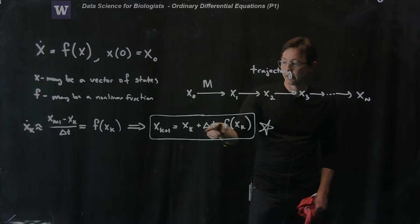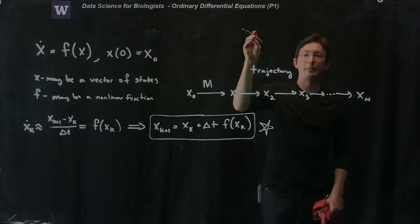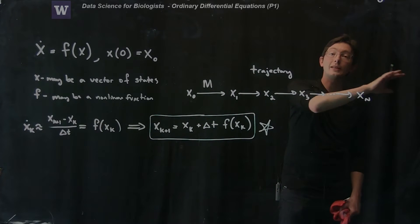So if I started with x naught, I can get x1. Then I plug x1 in here and I get x2, and I plug x2 in here and I get x3, and I step my system forward in time one delta t at a time.